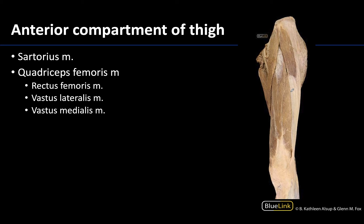We're looking at a kind of antero-slightly lateral view here. You can see a bit of the gluteus maximus because it's rotated just a little bit lateral, and we're going to start with the sartorius muscle, which I'm going to outline. You kind of lose it after a moment from this view because it is heading quite medially.